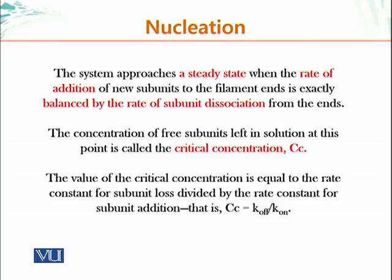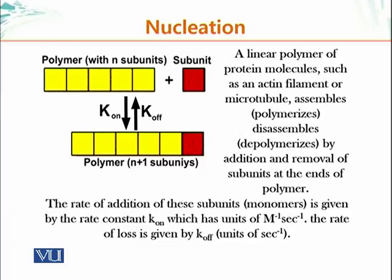The system approaches a steady state when the rate of addition of new subunits to filament ends is exactly balanced by the rate of subunit dissociation from the ends. The concentration of free subunits remaining in solution at this point is called the critical concentration. The value of critical concentration equals the rate constant of subunit loss (k_off) divided by the rate constant for subunit addition (k_on). Note that small k refers to a rate, not a constant itself — capital K is the constant.